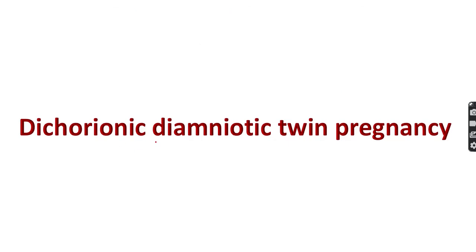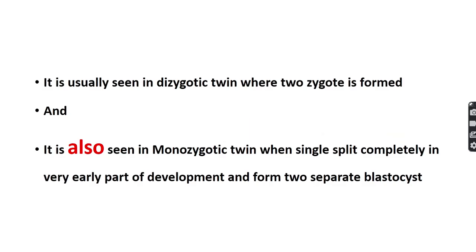Dichorionic diamniotic twin pregnancy is seen in dizygotic twins and also in monozygotic twins when the single zygote splits completely in the very early part of development.